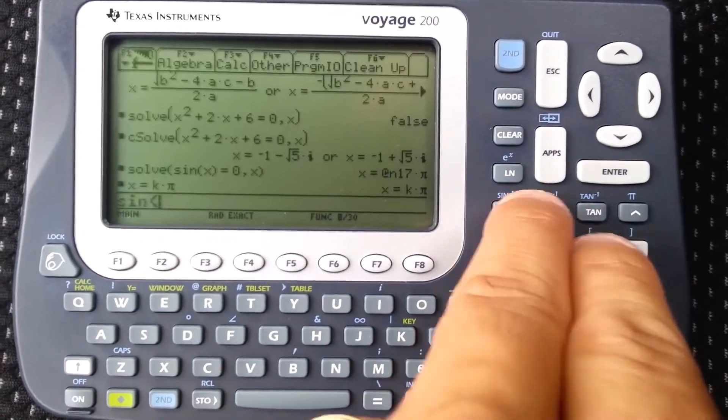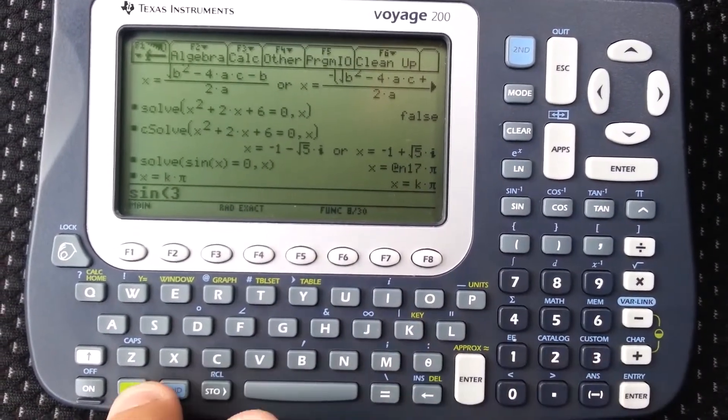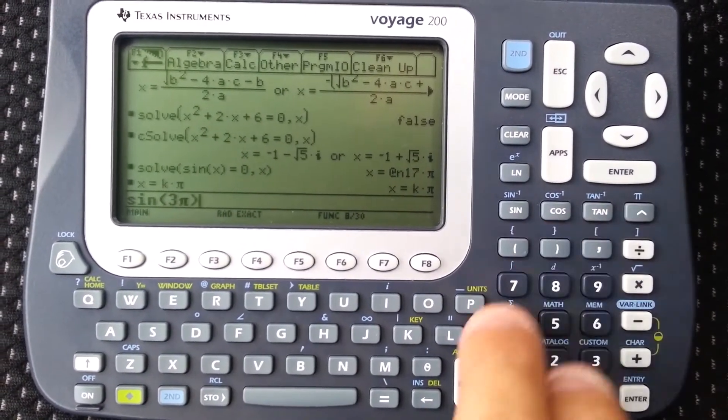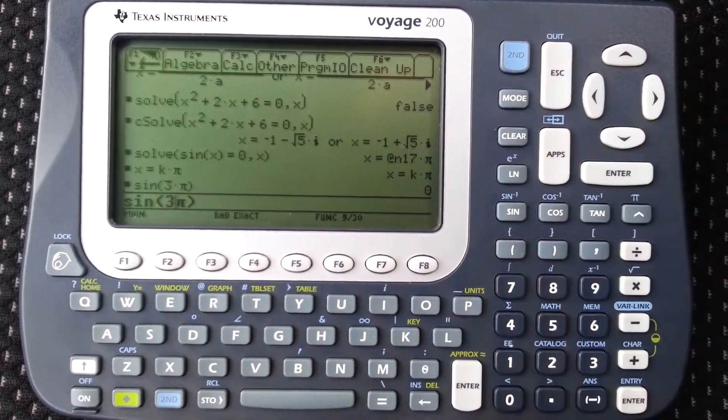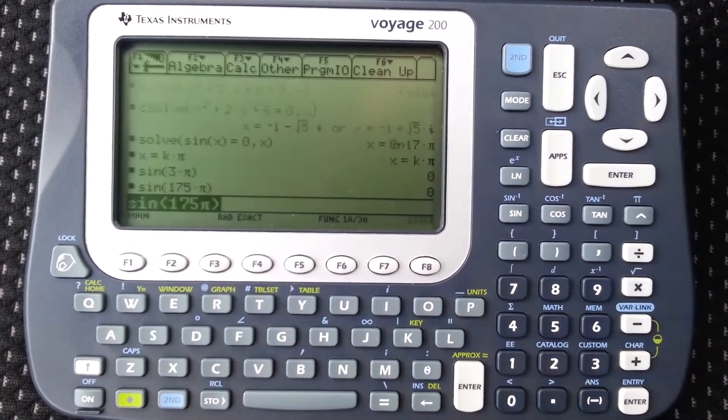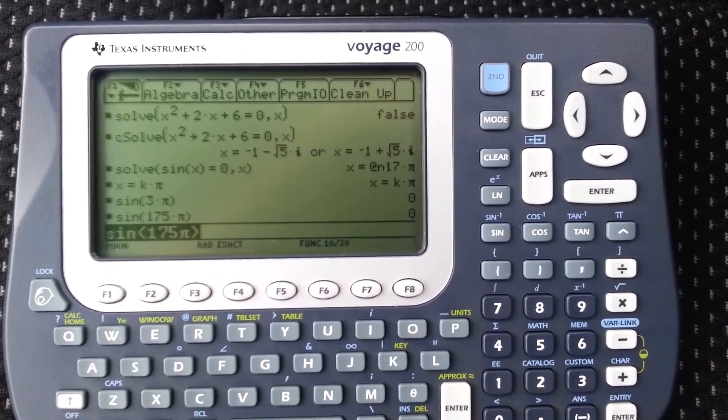For example, the sine of three pi equals zero. The sine of 175 pi equals zero.